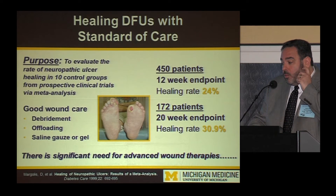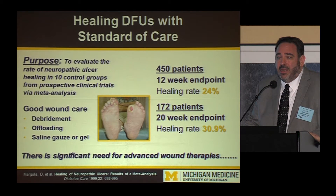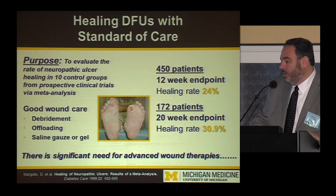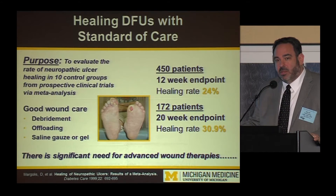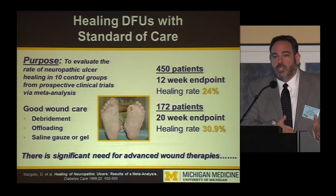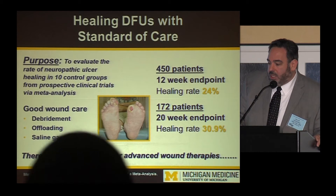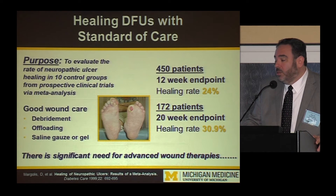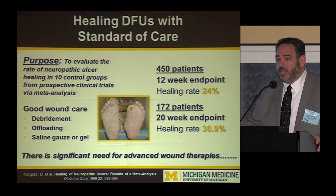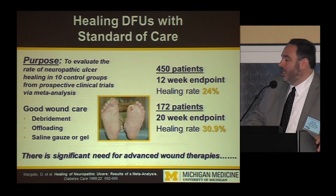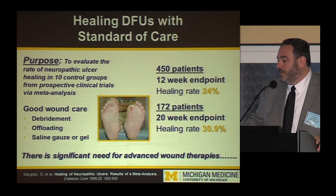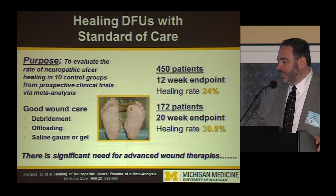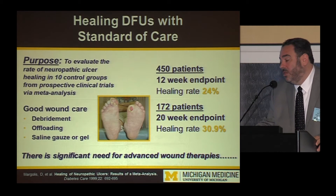Many of you may be familiar with this landmark work of Dave Margolis. He tried to answer: how good are we at healing wounds with standard of care? He took 10 control arms from randomized clinical trials and evaluated those control arms — with frequent debridements, moist wound healing, and offloading. This meta-analysis included several trials going out to a 12-week endpoint, and he determined that healing rates with standard of care were under 25%. So less than one in four of these wounds will heal at three months.